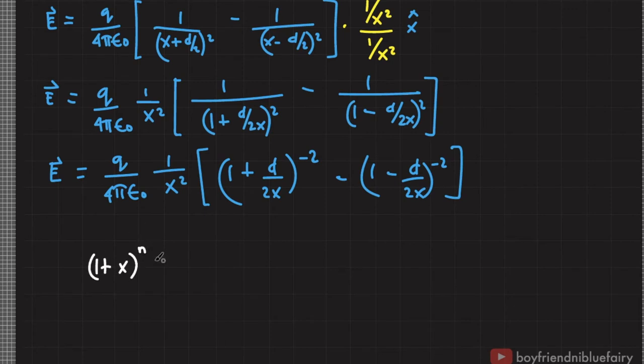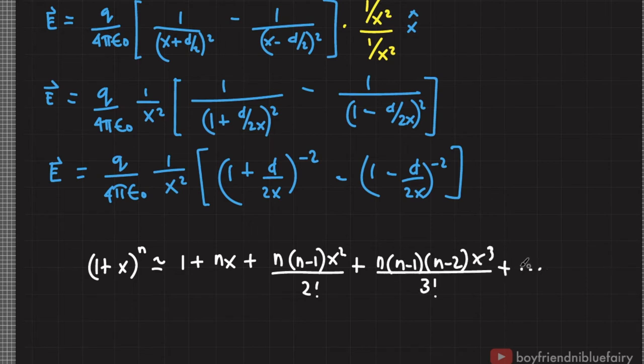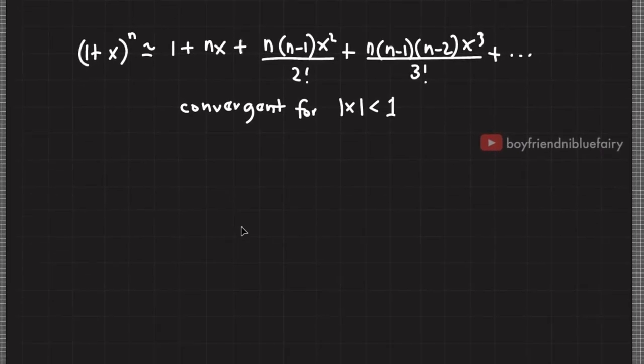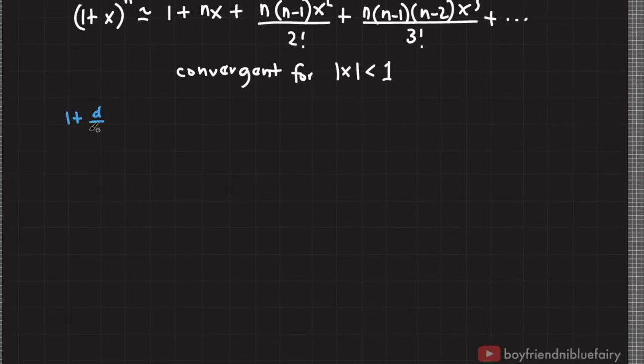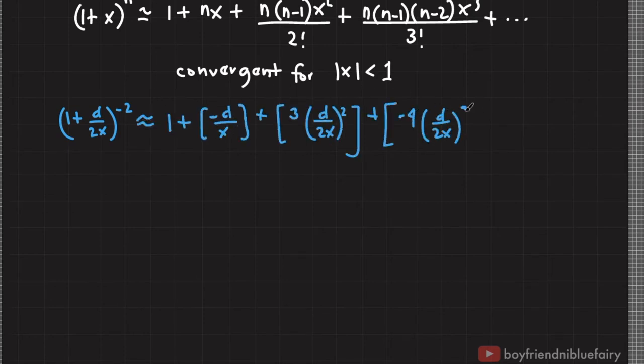Before we proceed, let me rewrite this power series that converges for absolute value of x less than 1. Using this power series, we can expand this term here, 1 plus d over 2x raised to negative 2 equals 1 plus negative d over x plus higher order terms and so on.